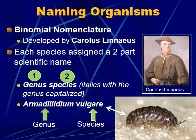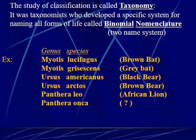Binomial nomenclature was originally developed by Carlos Linnaeus. He came up with this system where each species gets a two-part scientific name. The first part is the genus name, and the second part is the species name. Both are italicized; the genus name is always capitalized while the species name is always lowercase. So for Armadillium vulgara, the 'A' is capitalized and 'vulgara' is lowercase. The study of this classification is called taxonomy, and you can usually get away with just the genus and species name.